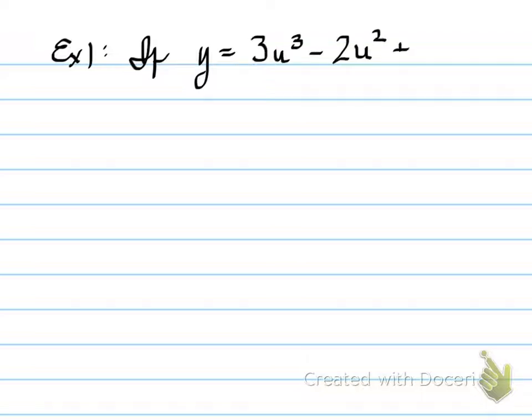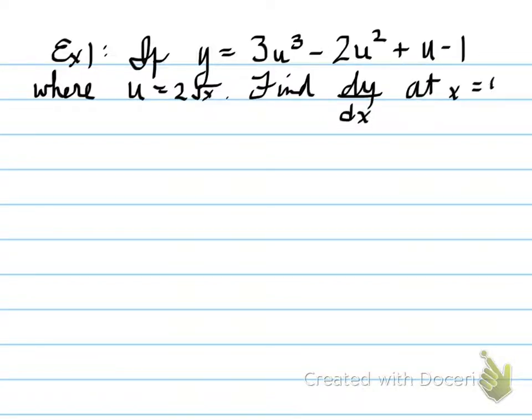In this section we'll look at it. If y equals 3u cubed minus 2u squared plus u minus 1, where u is equal to 2 root x, you are asked to find dy by dx at x equals 4. How do we do that? I'll take the derivative of y with respect to x. Looking at y, there's no x's in it.